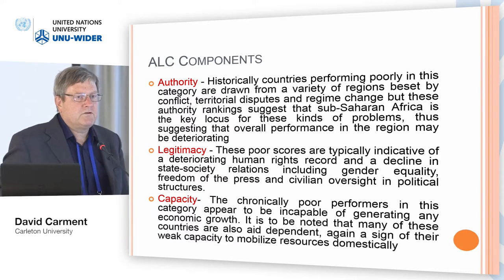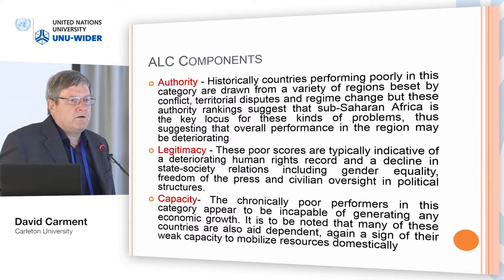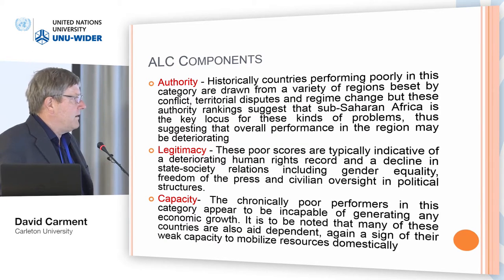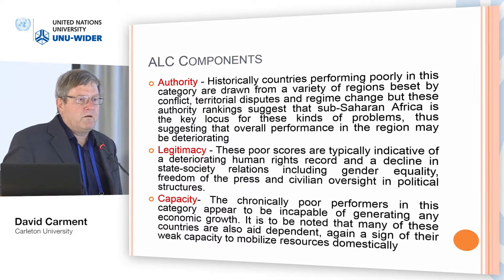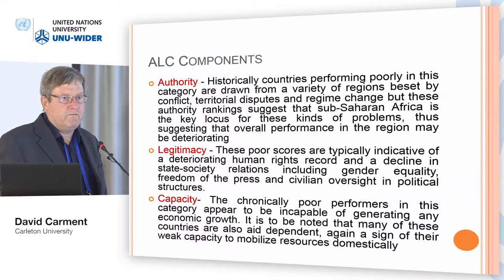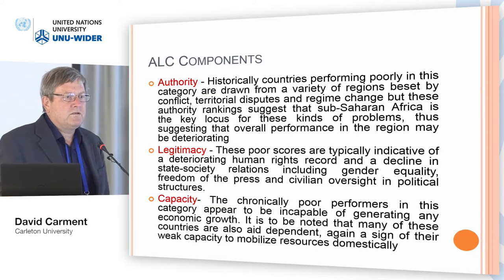Legitimacy is probably the least understood and least well operationalized of the three measures. It is typically an assessment of the state-society relationship in which people respect or accept the governance structures they face. We measure legitimacy through human rights accords, gender equality, environmental protection, and so on. Historically a number of the least legitimate countries have come from the Middle East — at one point Saudi Arabia was the least legitimate country for several years, yet was a country working with us in the global war on terror.